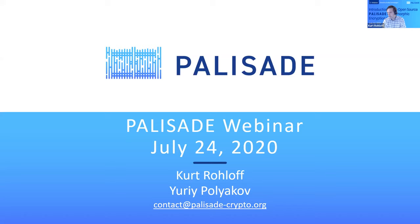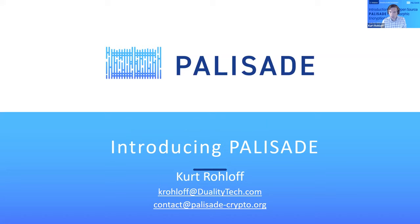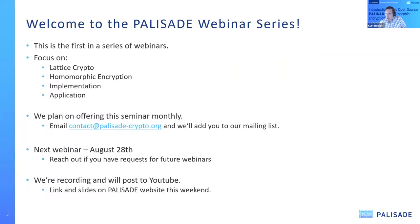Our email address for the Palisade project is contact@palisadecrypto.org. Please feel free to reach out to us at any time. Our next webinar will be on August 28th — reach out if you have any future requests. We have a mailing list, a Google group, and you can join through the email we advertised this webinar with or by reaching out to contact@palisadecrypto.org.